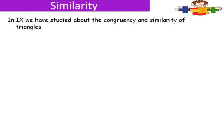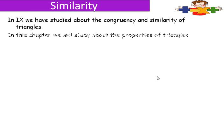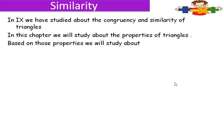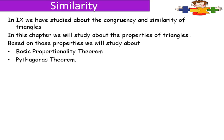In 9th standard we have studied about the concurrency and the similarity of the triangles. In this chapter we will study about the properties of the triangle. Based on those properties we will study about the Basic Proportionality Theorem, BPT, or we can also call it Thales theorem, and the Pythagoras theorem.